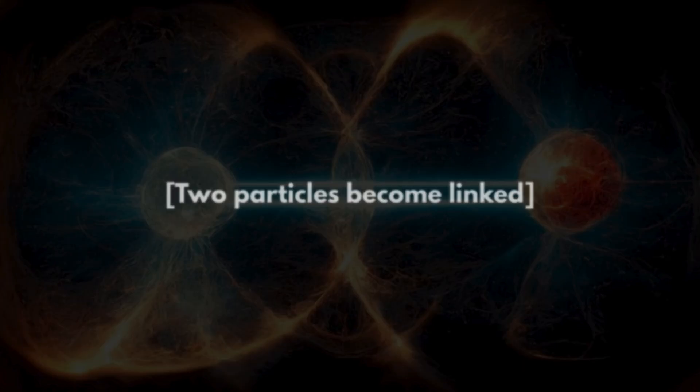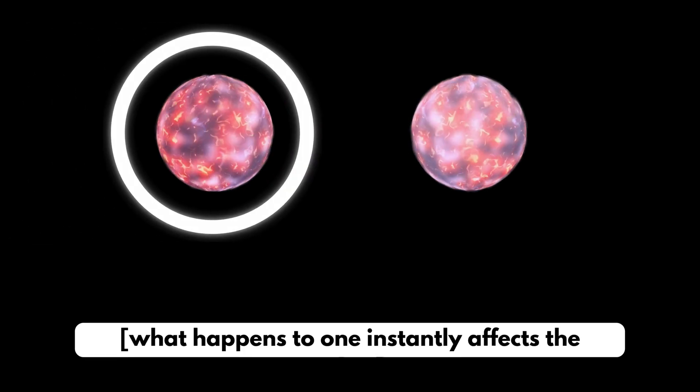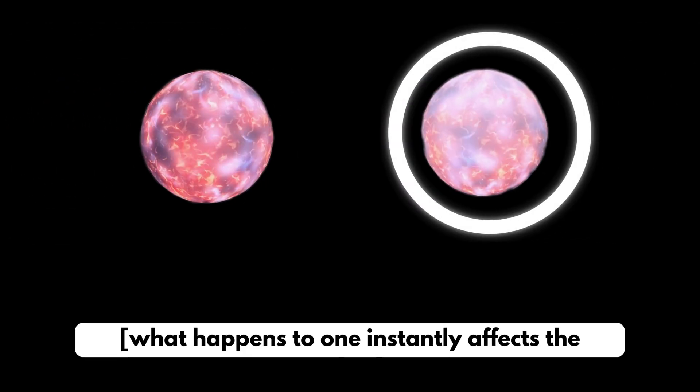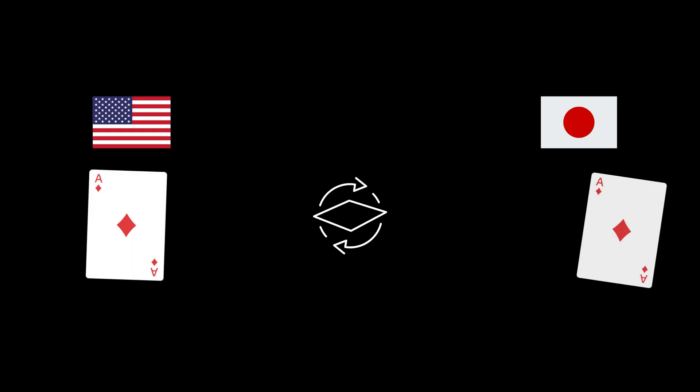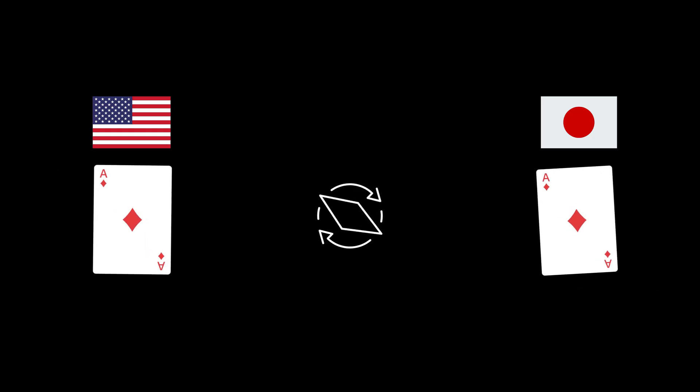Entanglement sounds like magic. Two particles become linked so deeply that what happens to one instantly affects the other, no matter the distance. It's like having two playing cards, one in New York, one in Tokyo. And when you flip one, the other flips too. Instantly.